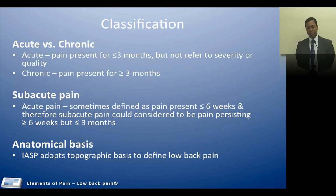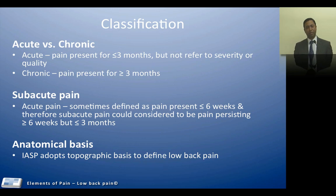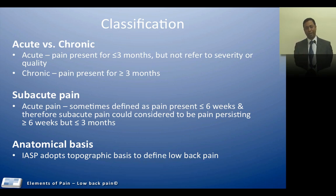If you try to classify pain on an anatomical basis, we would look at the International Association for Study of Pain's classification, which is on a topographical basis. They use the lowest thoracic spinous process with a transverse line drawn across it, another transverse line going across the sacrococcygeal line, and two horizontal lines going across the lateral border of the erector spinae, which then forms the anatomical delimitations of the low back area.